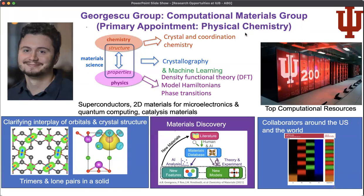My primary appointment is in physical chemistry, though my group is open to people with a variety of backgrounds — whether chemistry, physics, material science, or chemical engineering. It's at the intersection of tools usually used in chemistry, like crystal and coordination chemistry, tools used in material science for analysis or discovery, things like crystallography and machine learning for materials discovery.